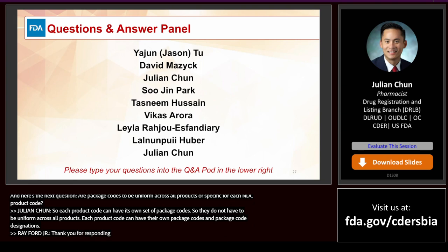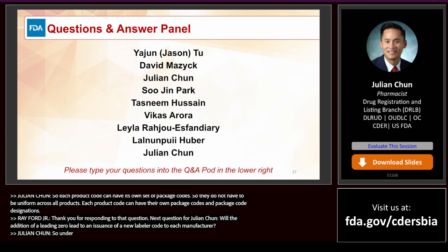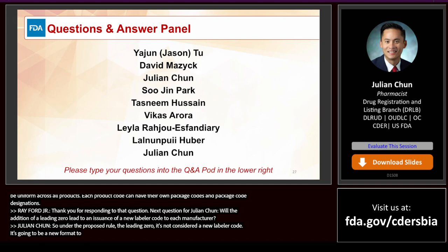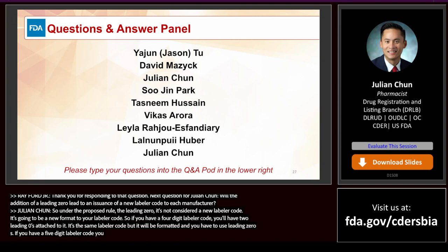Question: Will the addition of a leading zero lead to the issuance of a new labeler code for each manufacturer? Under the proposed rule, the leading zero is not considered a new labeler code. It's a new format for your existing labeler code. If you have a four-digit labeler code, you'll have two leading zeros attached. If you have a five-digit labeler code, you'll have one leading zero in front. It's the same labeler code, just formatted with leading zeros.